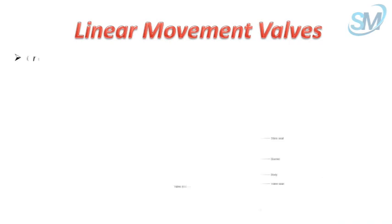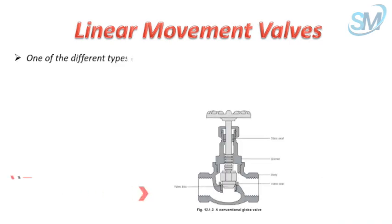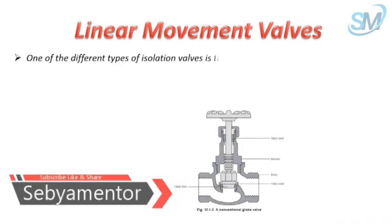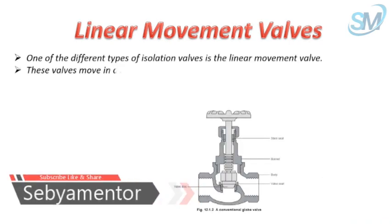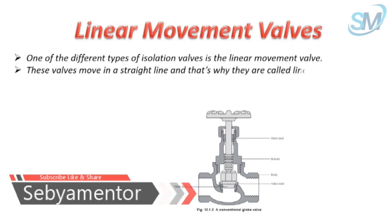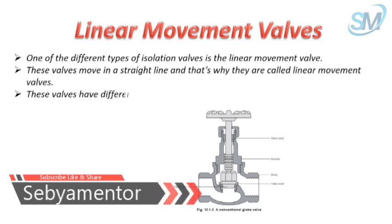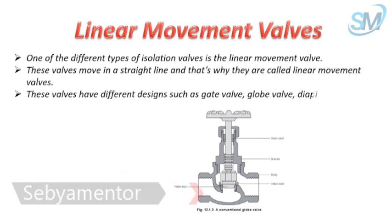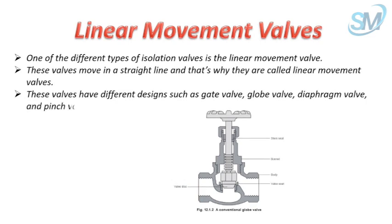One of the different types of isolation valves is the linear movement valve. These valves move in a straight line, which is why they are called linear movement valves. These valves have different designs such as gate valve, globe valve, diaphragm valve, and pinch valve.